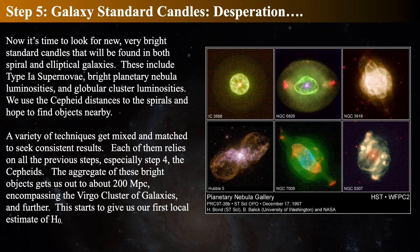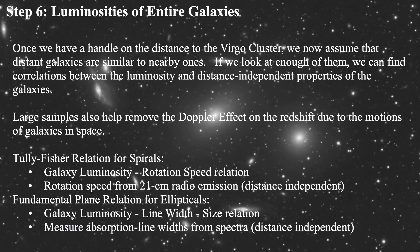Cepheids are the most important thing, and we've got to find Cepheid variables in spirals and hope to find something there that helps. Getting out to the Virgo cluster starts to give us a local estimate of the expansion rate of the cosmos—though the local group is approaching the Virgo cluster, making it tricky. Once we have a distance to the Virgo cluster, we can assume that galaxies are similar objects to nearby ones. If you look at enough of them, you can find correlations between luminosity and some distance-independent property, and large samples help remove the Doppler effect due to peculiar motions.